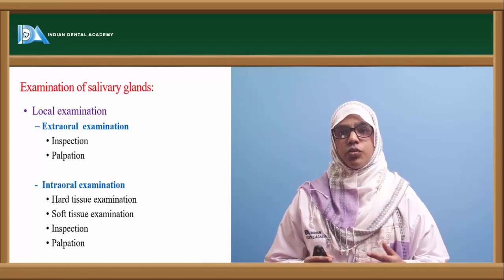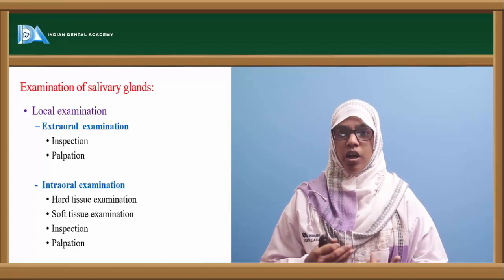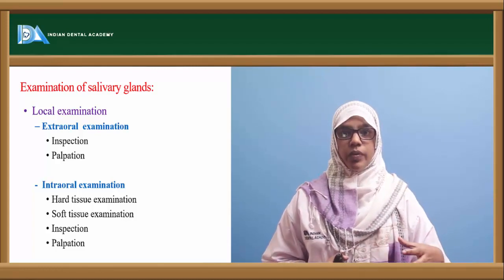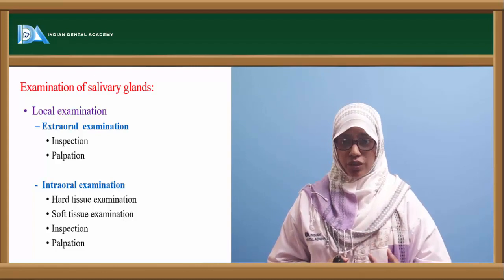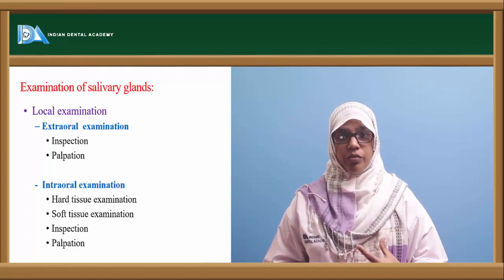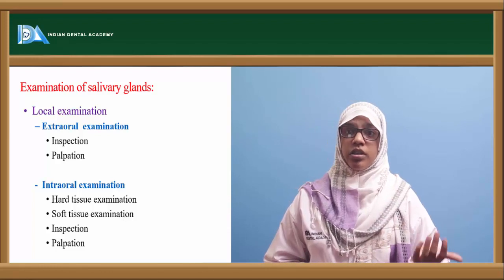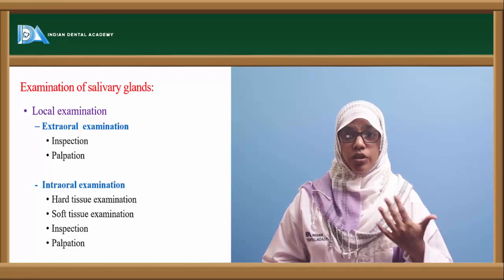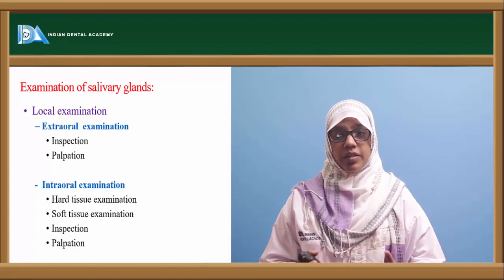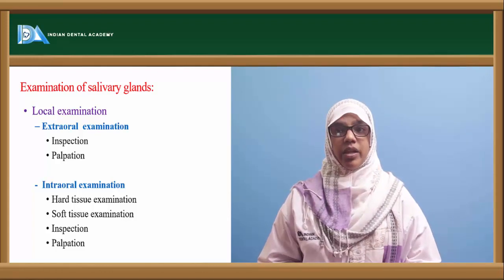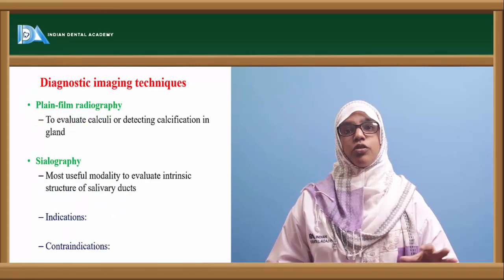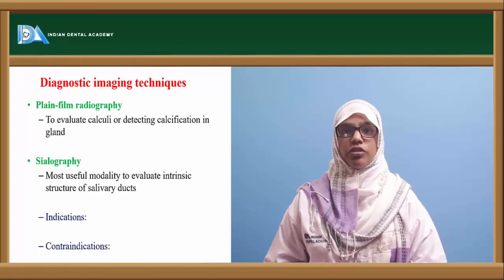Then do an intraoral examination. Hard tissue examination: see if the swelling involves the bone or is just soft tissue; look for carious teeth. Soft tissue examination: look for the consistency and overlying mucosa of the swelling — inspect then palpate. Once clinical examination is complete, you will arrive at a differential diagnosis, which you then confirm using imaging techniques.